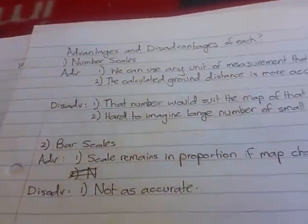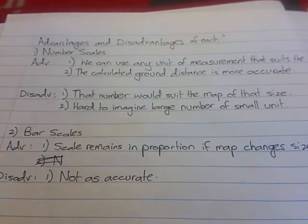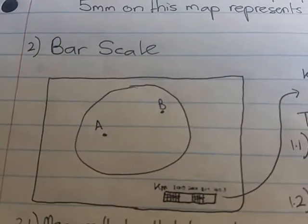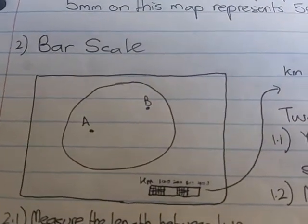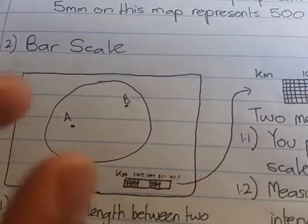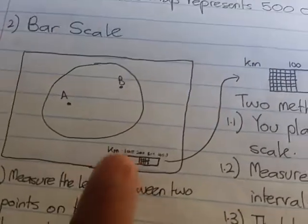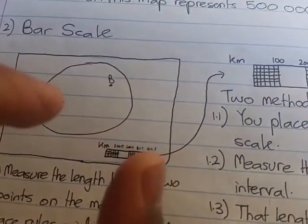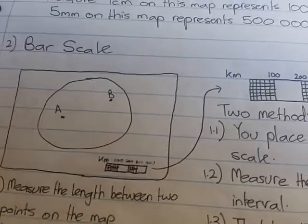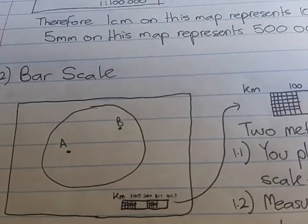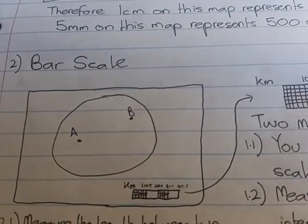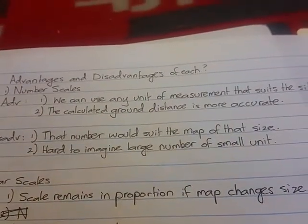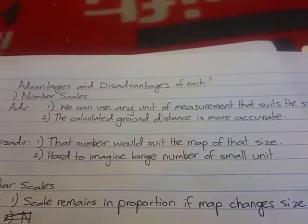For bar scales, there's one main advantage and one main disadvantage. The main advantage is that the scale remains in proportion if the map changes size. So if we go to our face-shaped map — if I made this map bigger or smaller, it doesn't matter because the bar scale is on the actual map. If it gets bigger, the bar scale gets bigger along with it; if it goes smaller, the bar scale goes smaller. So it still remains in proportion to the size of the actual map.